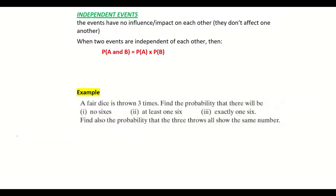Here we're looking at independent events as part of our probability. Independent events occur when we carry out an event more than once. What it means is that as I carry out each event, the previous event will not impact or have an influence on my second event. Think of that like flipping a coin — the first and second flipping of the coin will not impact on getting a head or a tail on the third flip. So we call that independent; they don't impact on each other.